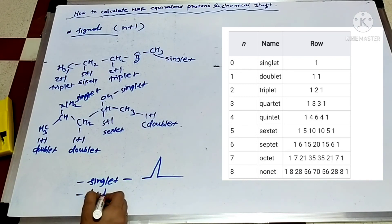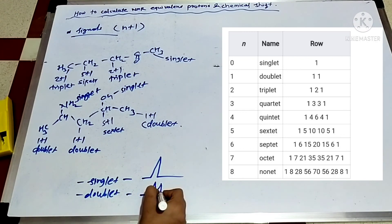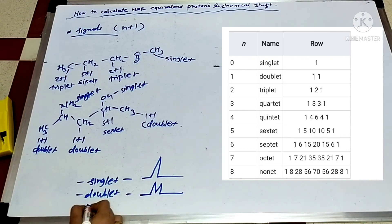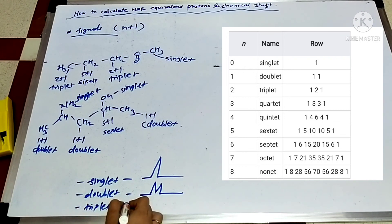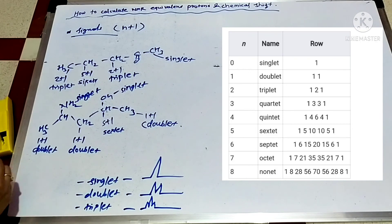Next we see the doublet peak — these are the doublet peaks, showing two lines. And the triplet: a triplet is like this — three lines. This is the triplet, and so on.